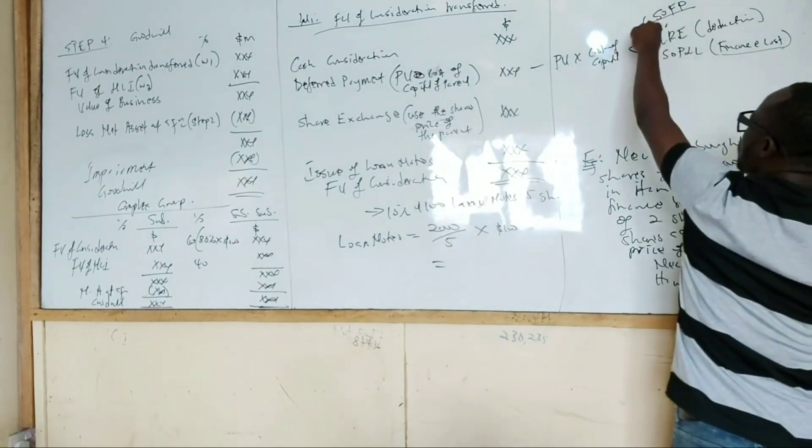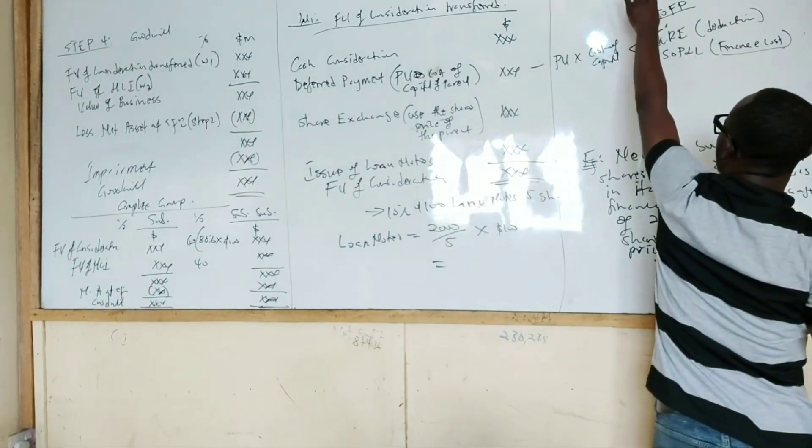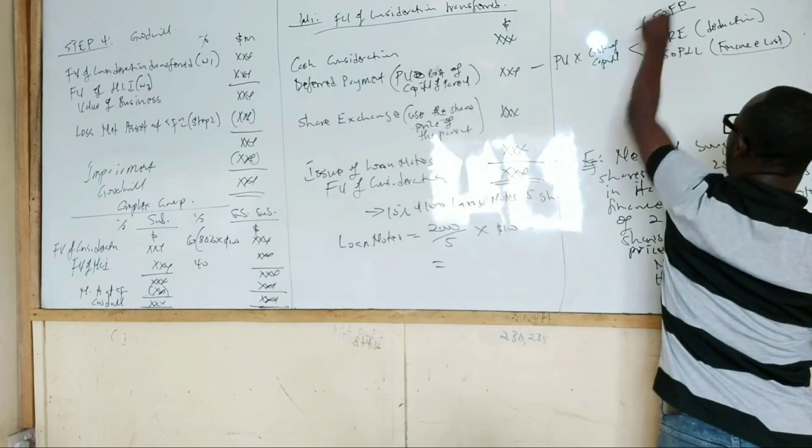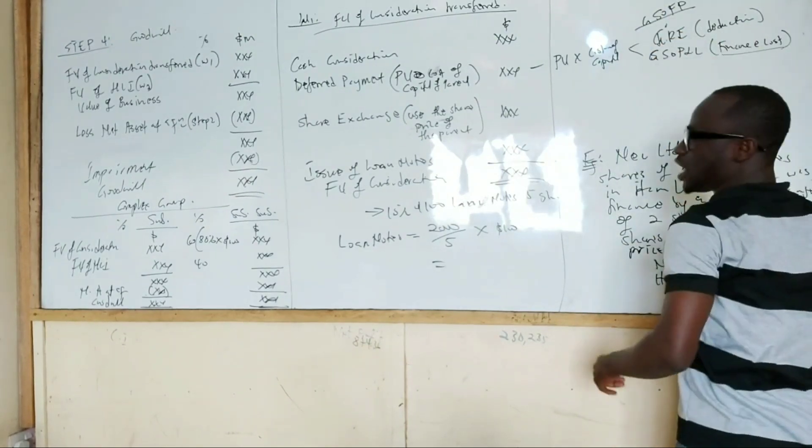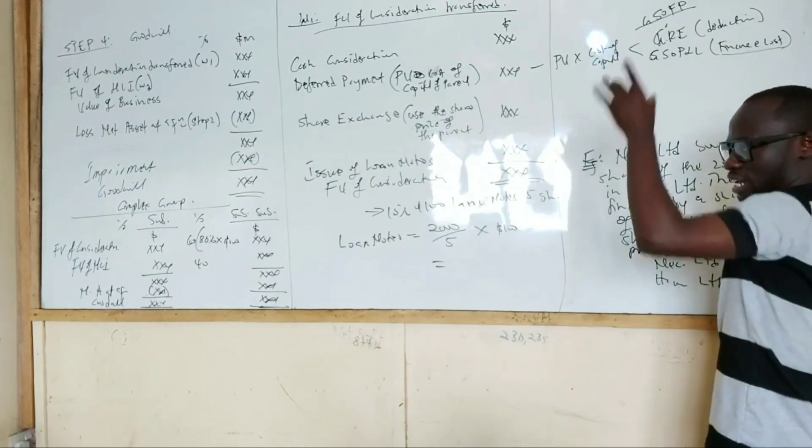So we will deduct it from group retained earnings. That is if we are preparing statements of financial position. But if we are preparing income statements, that interest will go to finance costs under the parent's schedule.